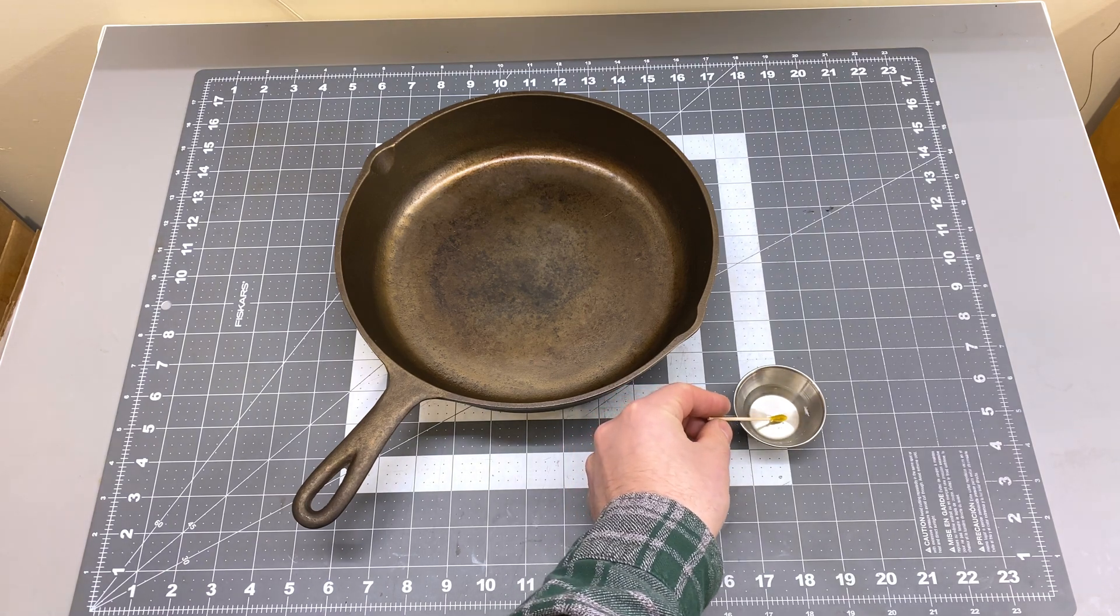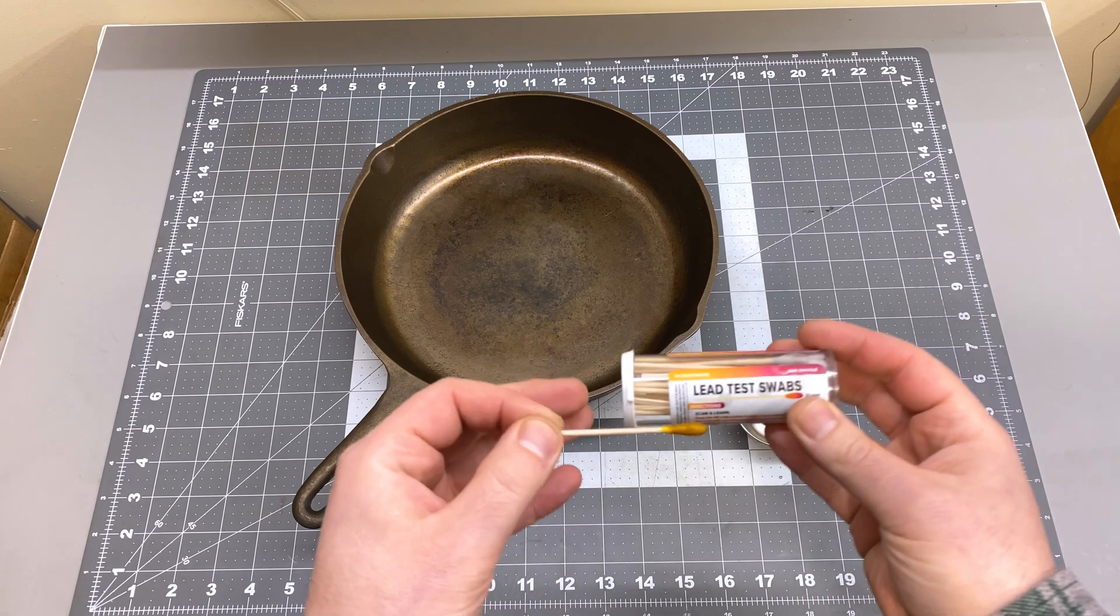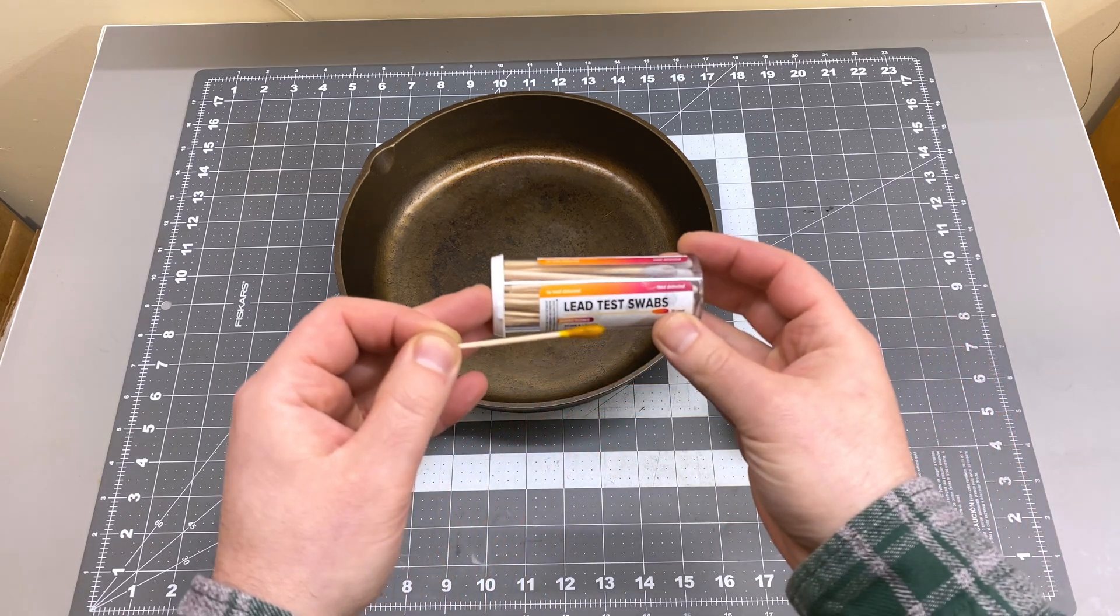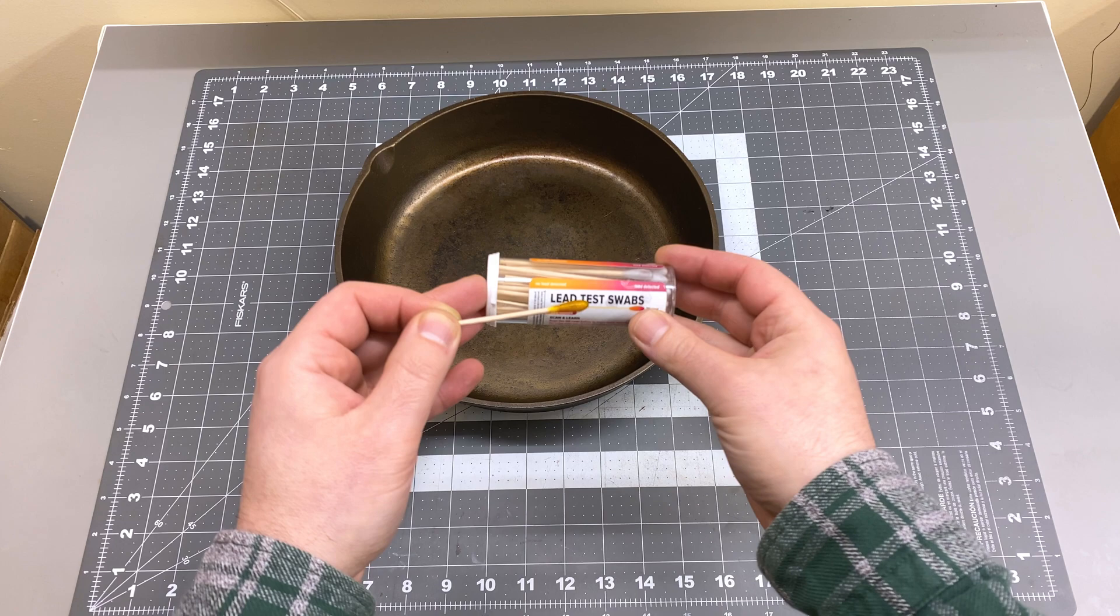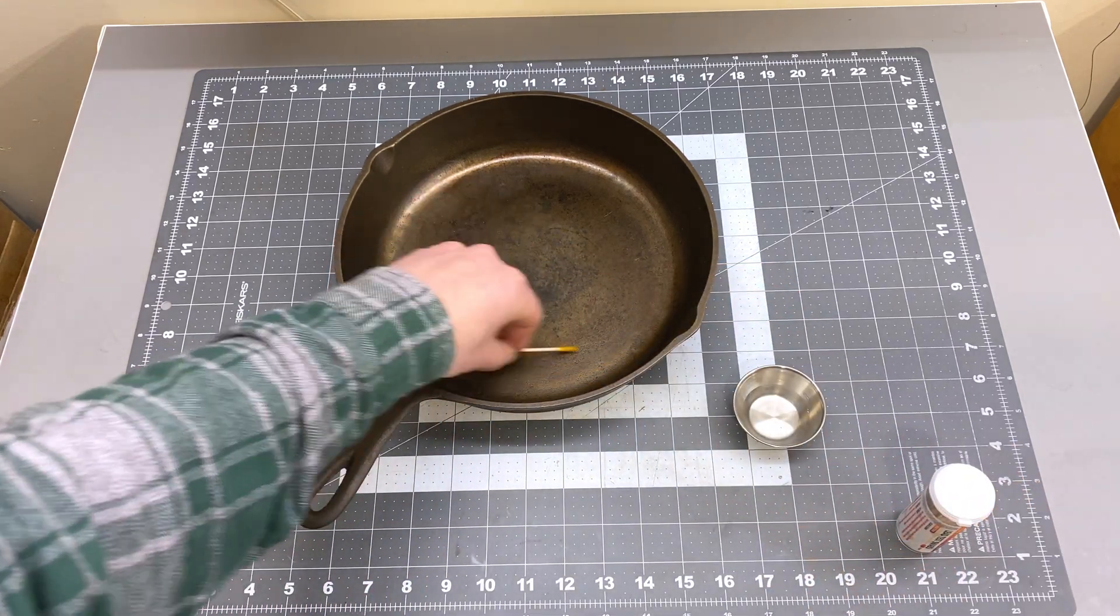So to activate you dip them in white vinegar until they turn that mustard color, and then if they turn a darker shade in that pink and purple area, then that is a positive lead test.